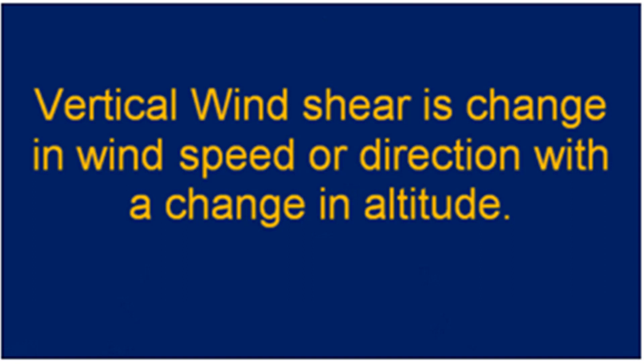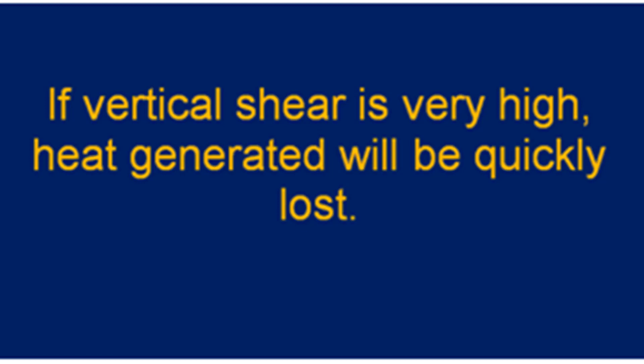The third condition is weak vertical wind shear. Low vertical wind shear is essential for a disturbance to develop, so that the latent heat generated during the convective process is not advected — that is, not transferred horizontally away from the circulation field. The wind speed must change slowly with height through the troposphere, by no more than 10 meters per second between the surface and an altitude of about 10,000 meters.